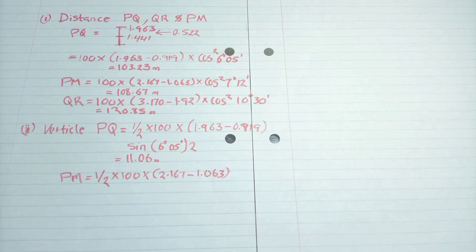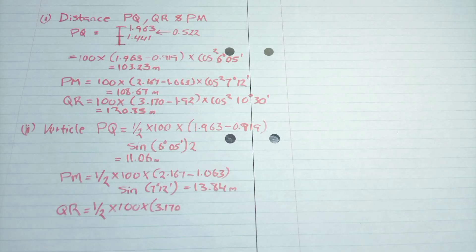Then we repeat the same for Q-R, and we get another value for the vertical distance. So and then our last vertical distance Q-R, we will do the same, so that's half times 100, into brackets 3.17 minus 1.92, then times sine 10 degrees 30 minutes, then our answer will do the multiplication of 2.